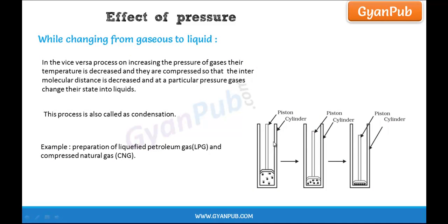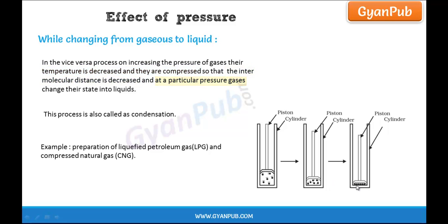Here in this diagram, we can observe a gas changing to liquid and a liquid changing to solid. Here we can see a piston and cylinder setup where a gas is present in a cylinder. If we compress the gas using a piston and cylinder setup, the intermolecular distance gets decreased, the particles come together. At a particular pressure, the gas is converted into liquid. And if we further increase the pressure, the liquid is converted into solid. So, to obtain gas to liquid, the increase of pressure plays an important role.